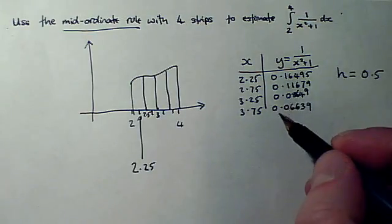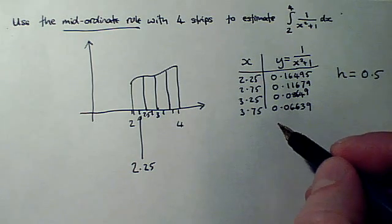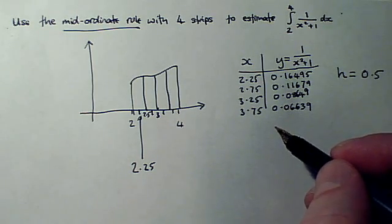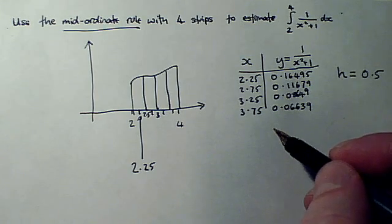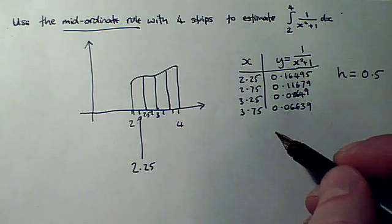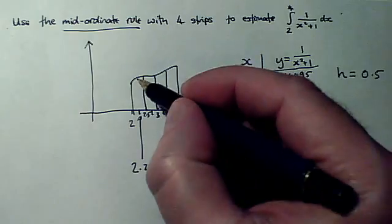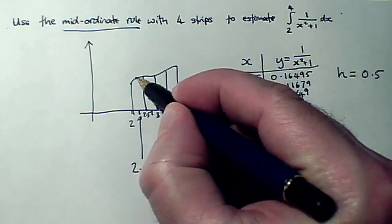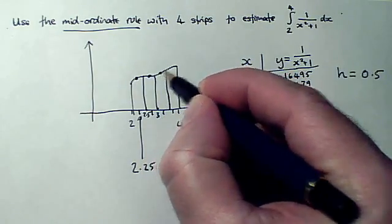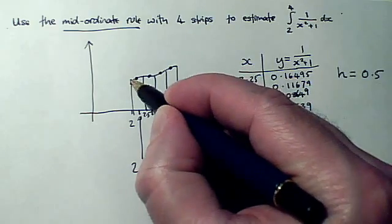And then I've got to put these into the mid-ordinate rule. Now there is a formula on page 8 of your formula book, but it looks too big and scary to really be worth getting used to. So you're better off just visualizing on your sketch graph what's going on. We've worked out the coordinates of the mid-point for each little strip of the curve.